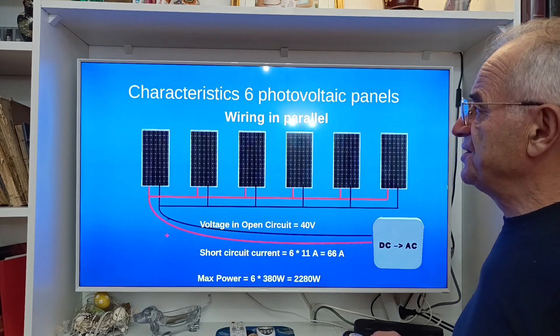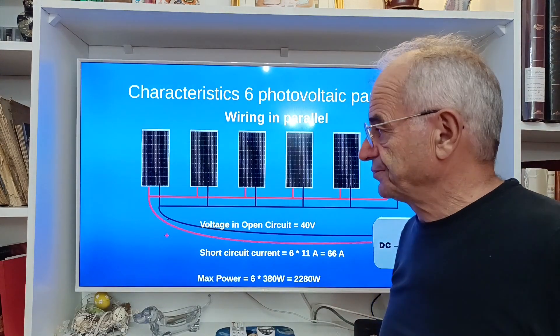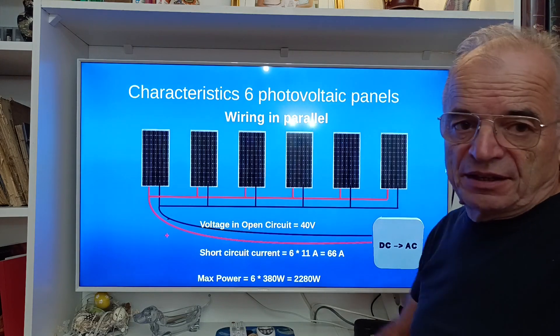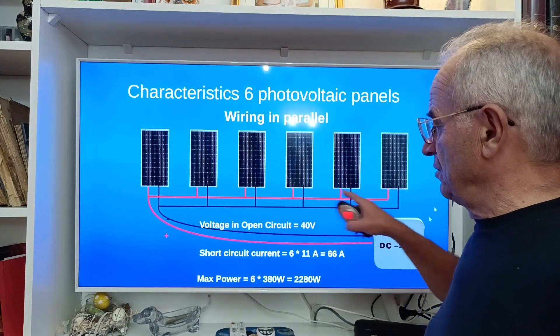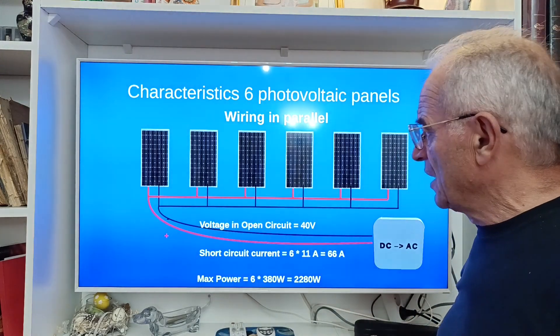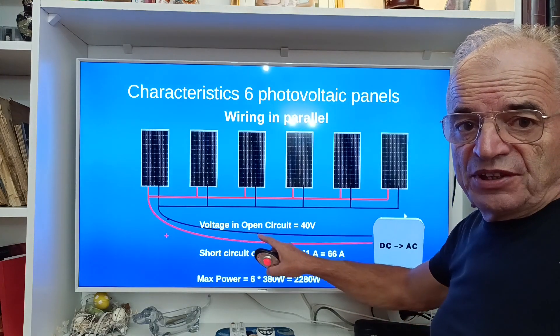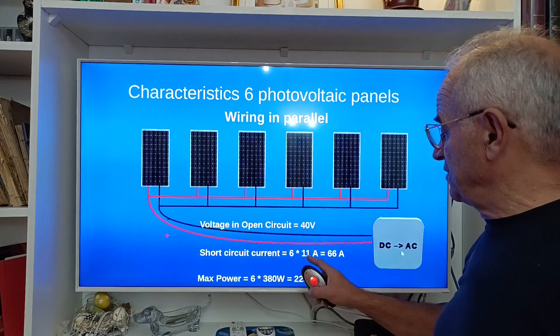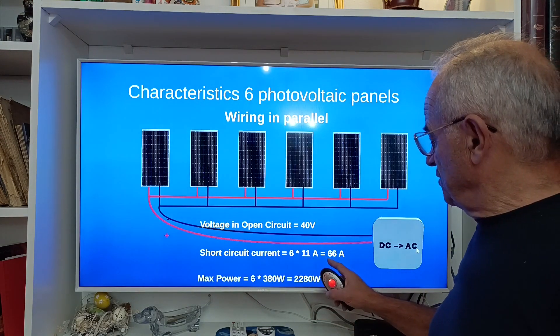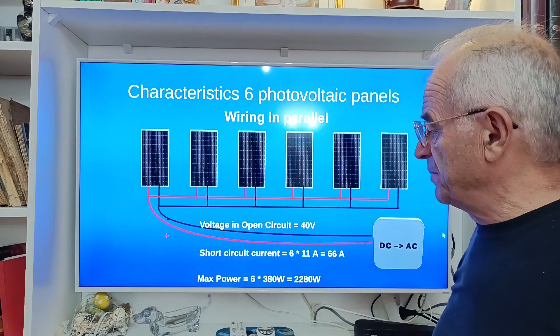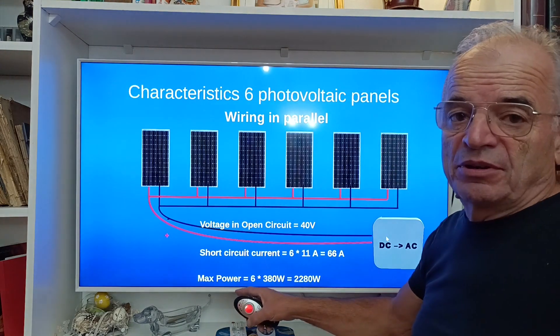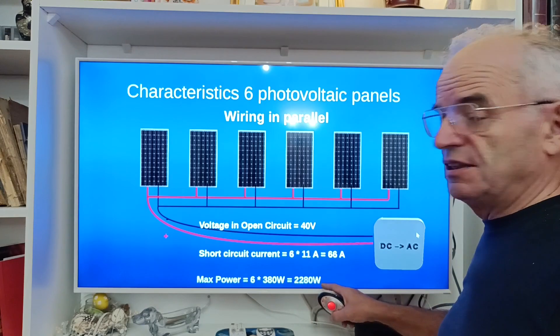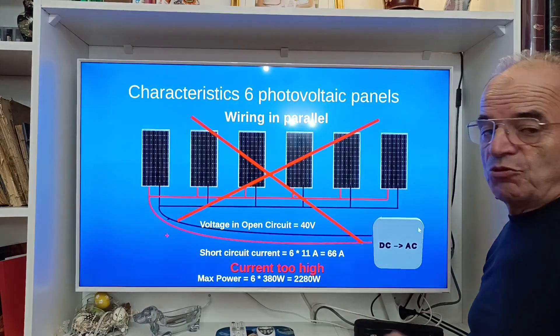Now we'll see how to interconnect six panels together. One solution is to put all these panels in parallel, to connect the positive outputs together and the negative outputs together. In such configuration we obtain an open circuit voltage of 40 volts because they are in parallel. And for the short circuit we obtain six times 11 amps, 66 amps, because all the panels are in parallel so we add the currents. So the maximum power possible for this configuration is about six times 380 watts, so 2280 watts.